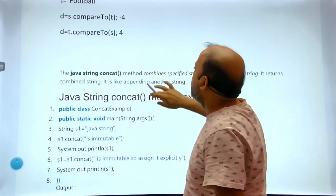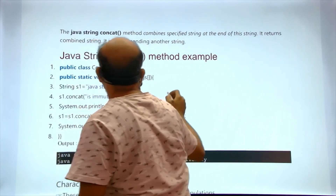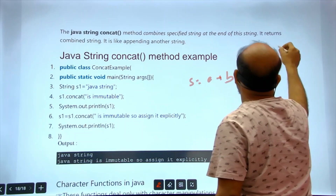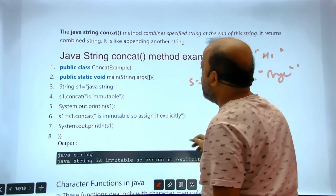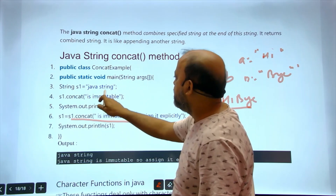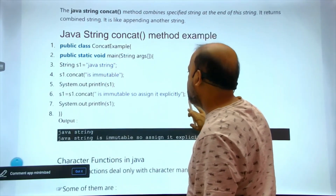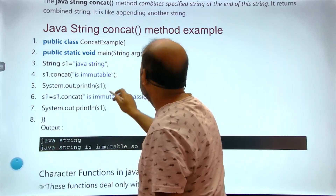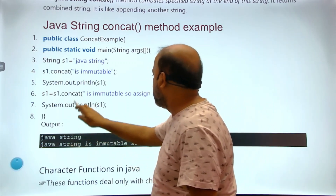concat() adds two strings together. Normally you use s = a + b; concat() does the same thing. For example, s1.concat(s2) joins them. However, since String is immutable, you must explicitly assign: s1 = s1.concat(s2). You can see in the output: just calling s1.concat() without reassigning still prints only 'java string'; after assigning, the full concatenated result appears.